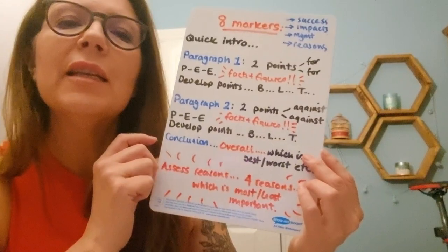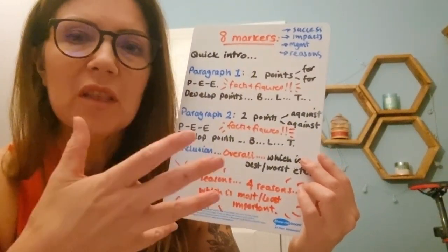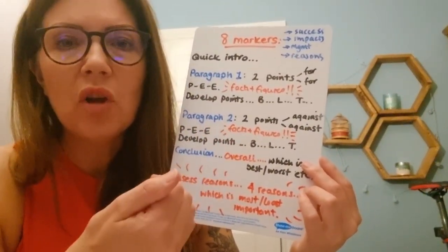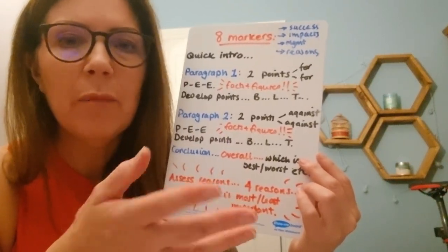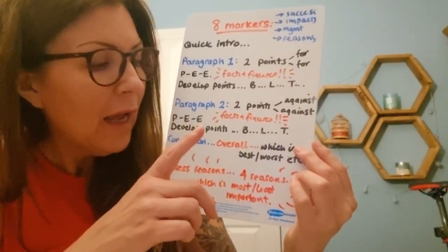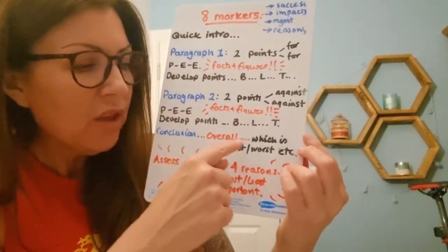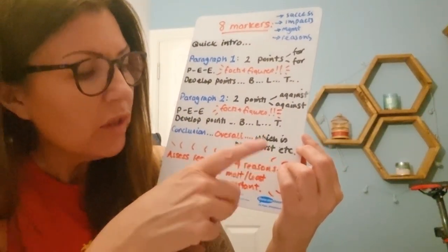Then the final paragraph is overall. So you're going to come to some kind of conclusion here over whether it's the pros or the cons that are best. You might decide that they're about equal and that's fine. That's okay. So that's your final paragraph. So which is best, which is worst, et cetera.